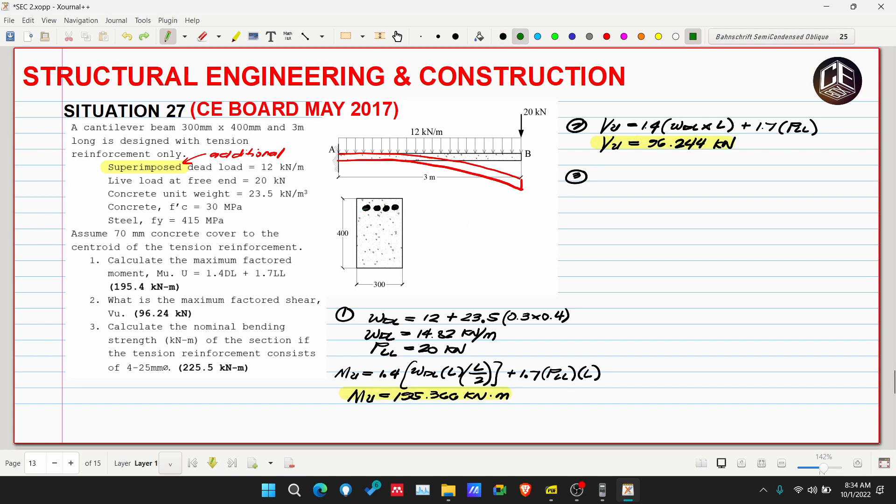The concrete cover with respect to the centroid of the tension reinforcement is 70 mm. Therefore, our effective depth is 400 minus 70, which is 330 millimeters.